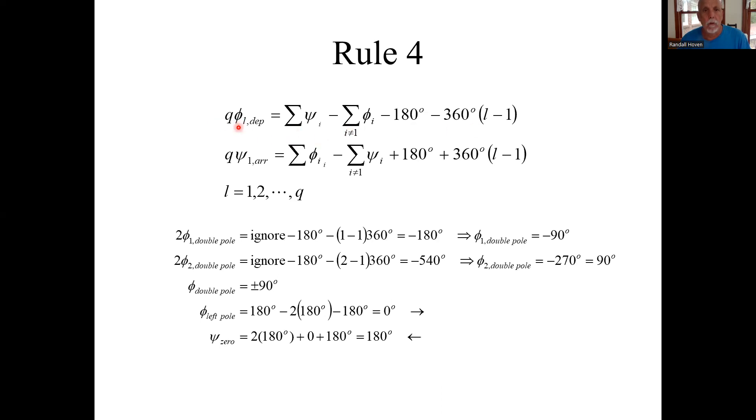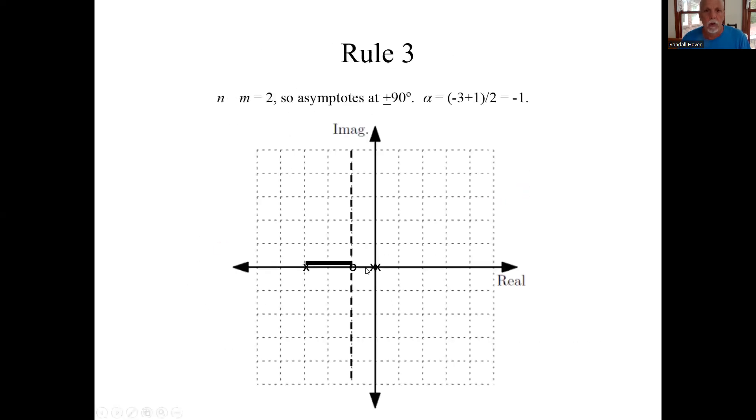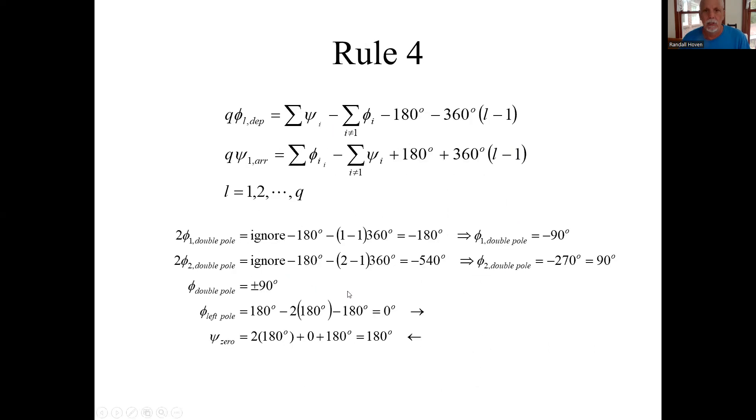So now let's get to the departure. So here is for the departure angle of the pole. First, we'll look at the double poles on the origin. We're looking at these guys. Well, these other guys are to the left, so we can ignore everything else. So everything in this formula except this part goes away. So we have the minus 180 and then L goes from 1 to 2. When L equals 1, this is just 0. So we just get the minus 180. That's not the departure angle. That's 2 times the departure angle. So the departure angle is just minus 180 divided by 2 or minus 90.